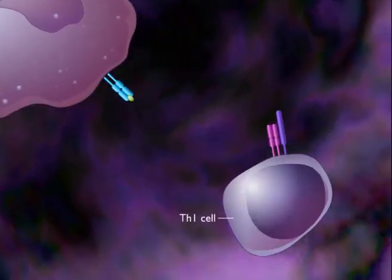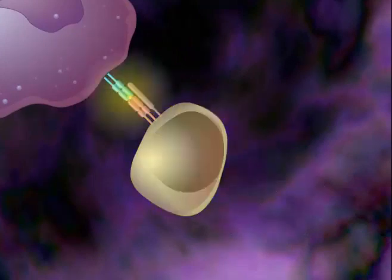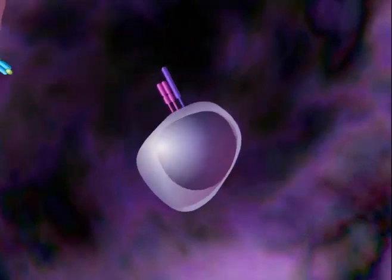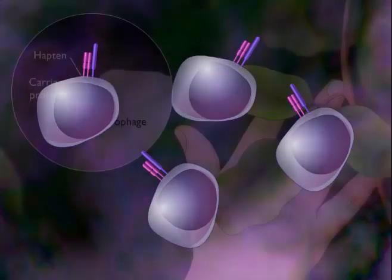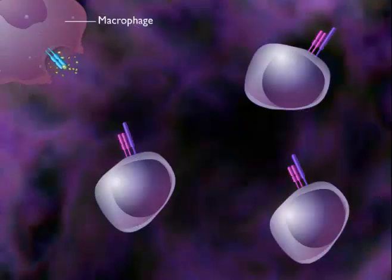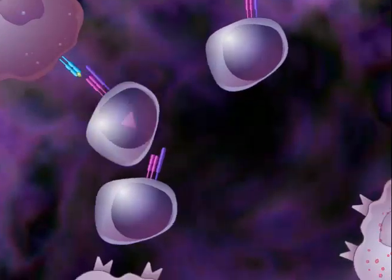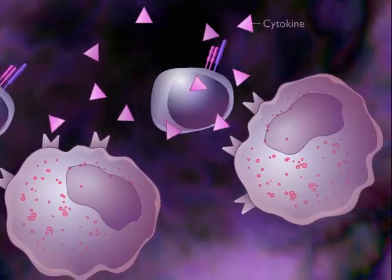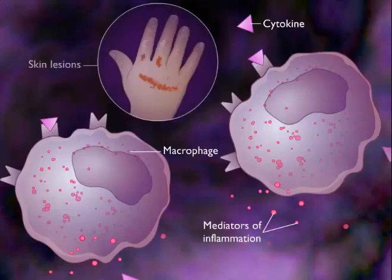Th1 cells with T-cell receptors capable of recognizing the hapten peptide antigen interact with the presented antigen, become activated and increase in numbers. When the host comes in contact with the allergen a second time, the Th1 cells react with the hapten peptide being presented on the macrophage, and release cytokines resulting in attraction of more macrophages, followed by inflammation and skin lesions.